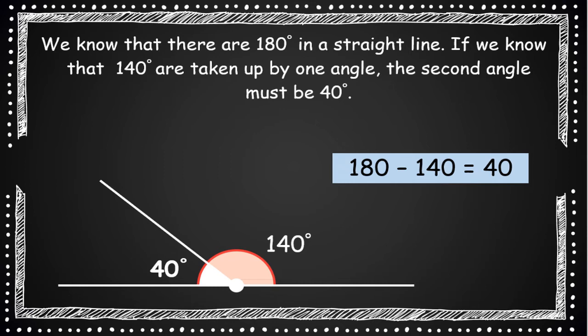Because we know that there's 180 degrees in a straight line, and if 140 are already taken up by one angle, the second angle must be 40 degrees.